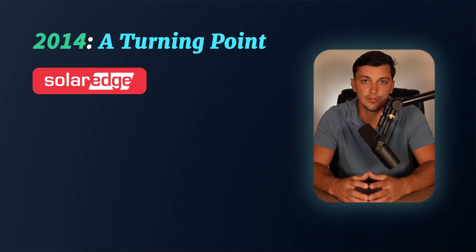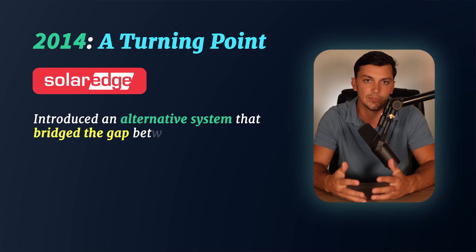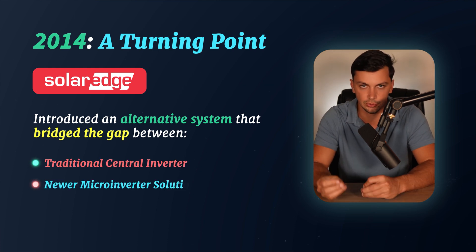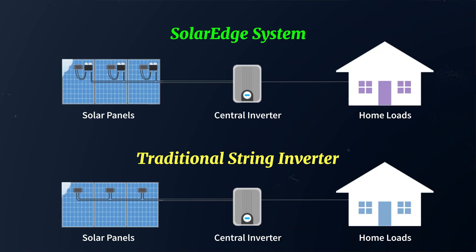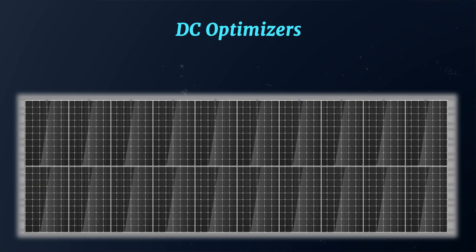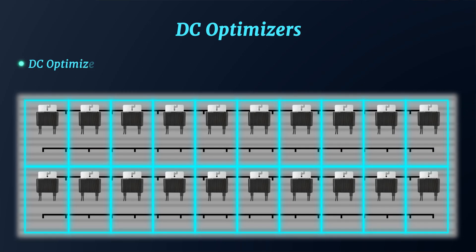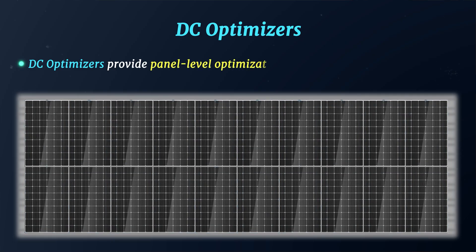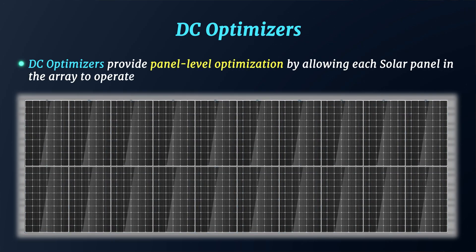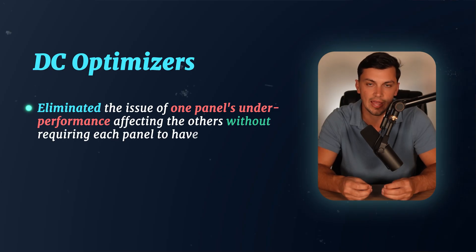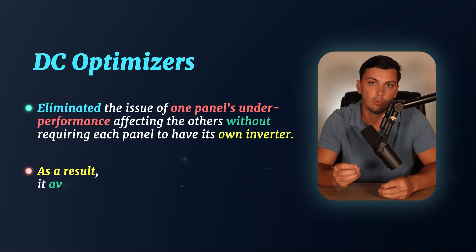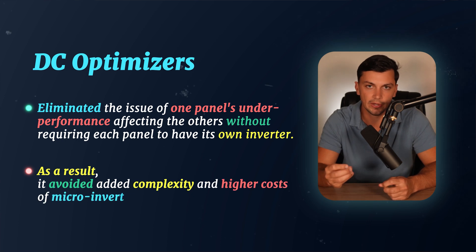In 2014, a company called SolarEdge introduced an alternative system that bridged the gap between the traditional central inverter and the newer microinverter solution. This system is now known as the DC-optimized inverter solution. The SolarEdge system retained the simplicity of wiring and installation found in a traditional string inverter, but added a new component — optimizers. These devices are installed behind each individual panel and provide panel-level optimization by allowing each solar panel in the array to operate at its maximum power point, MPP, independently. This innovation eliminated the issue of one panel's underperformance affecting the others without requiring each panel to have its own inverter, avoiding the added complexity and higher costs associated with microinverter installations.